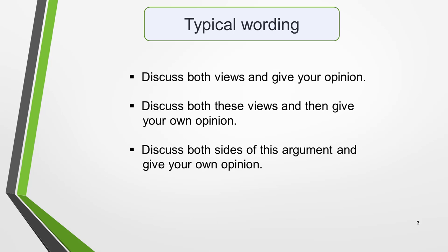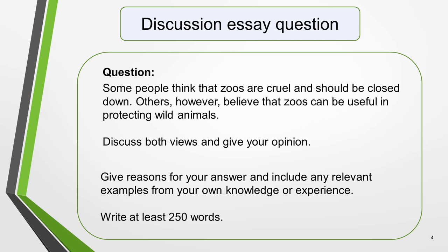The first part of a discussion essay will be a statement containing two opposing views. You will then be asked to discuss both sides of the argument and give your own opinion. Typical wording includes: 'Discuss both views and give your opinion,' 'Discuss both these views and then give your own opinion,' and 'Discuss both sides of the argument and give your own opinion.' Here's a question from a past test paper: 'Some people think that zoos are cruel and should be closed down. Others, however, believe that zoos can be useful in protecting wild animals. Discuss both views and give your opinion.' I'll be using this question to guide you through the process of planning and writing a discussion essay.